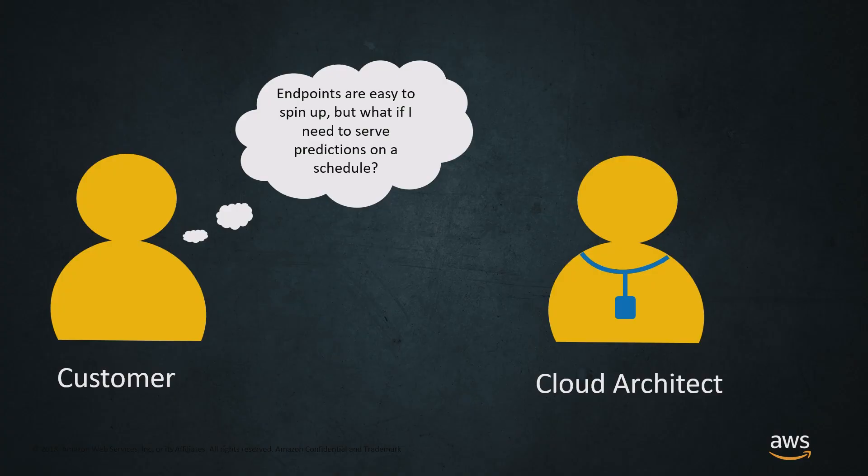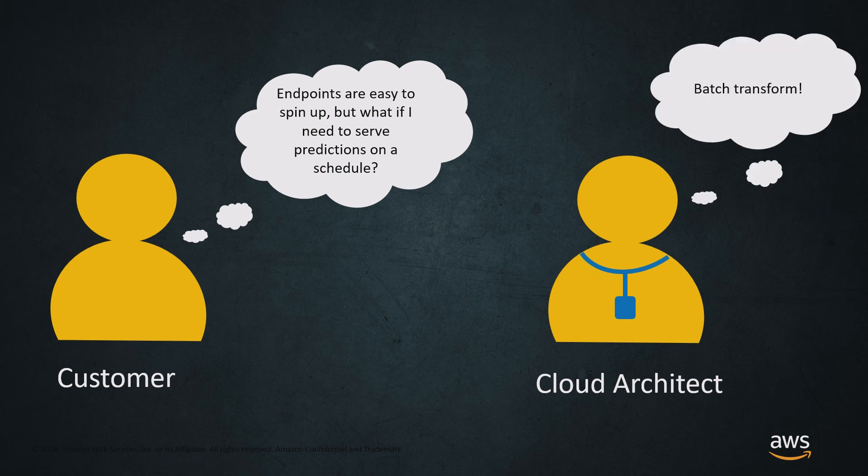So first, someone says to you, endpoints are really easy to spin up — that's just a single line of code, you write it, it's up there. But what if I need something to serve predictions on a schedule? What's your architect going to say? Batch Transform.